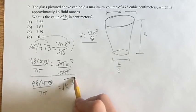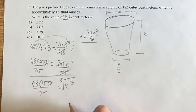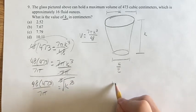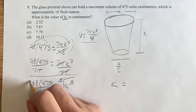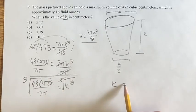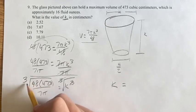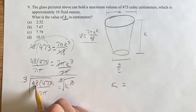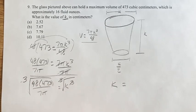How do we get k on its own? Well, if you take the cube root of k cubed, they cancel, and you're just left with k. Of course, you have to take the cube root of the other side. So we have k is equal to the cube root of 48 times 473 divided by 7 pi.